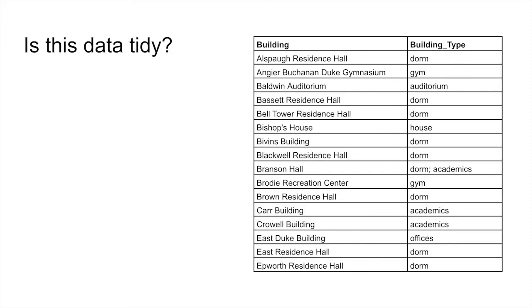Take a look at this example dataset. Does it seem like it is tidy enough to do some data visualization? In this case, there is still more tidying to be done. A tidy dataset would avoid multiple values in a single column, like the Branson Hall record that has two values under building type. Branson Hall should have two separate records, one for each value of building type.